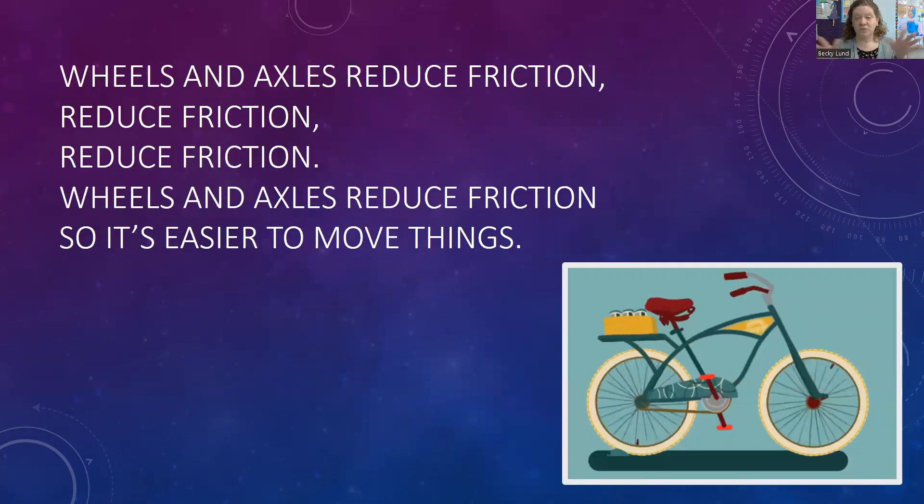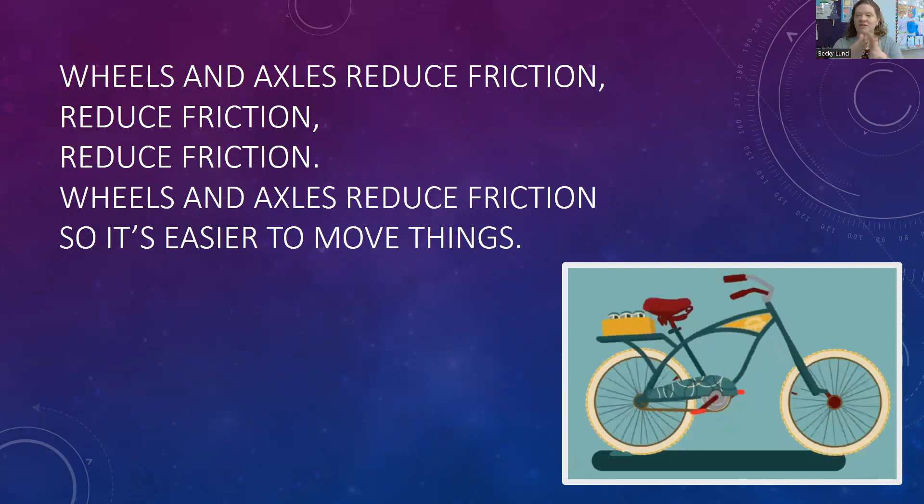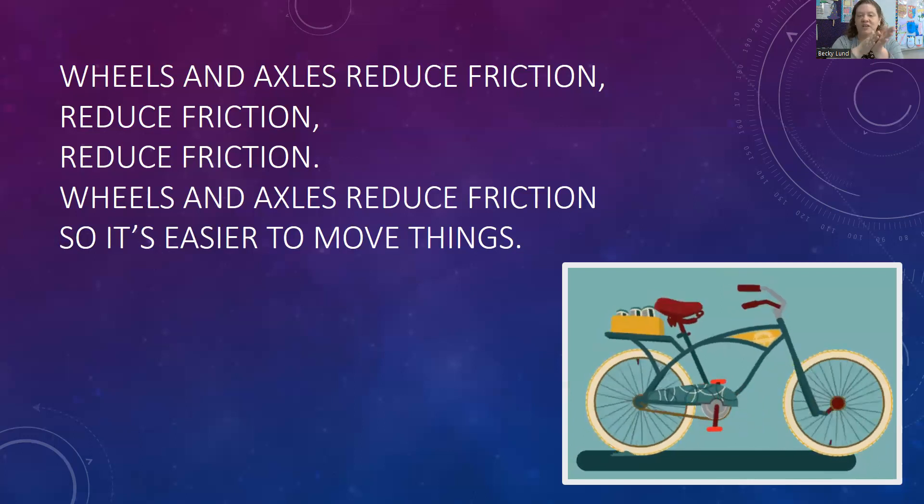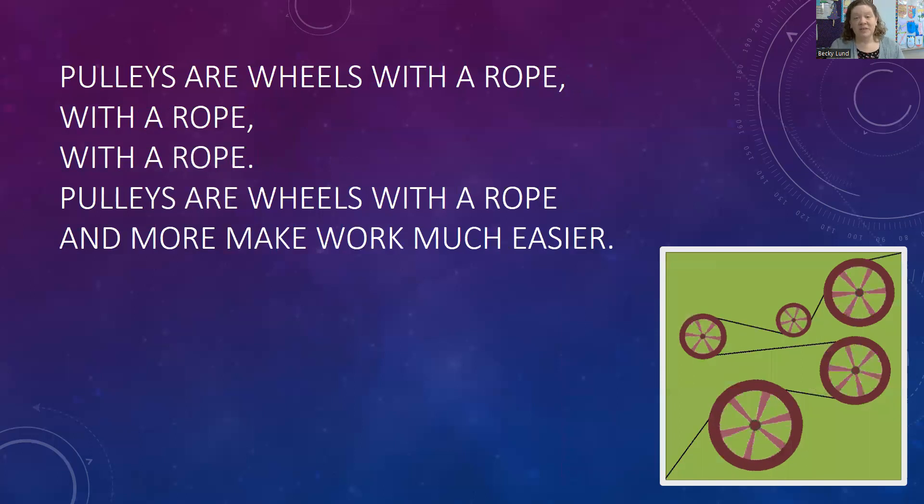Wheels and axles reduce friction, reduce friction, reduce friction. Wheels and axles reduce friction, so it's easier to move things. Pulleys are wheels with a rope,